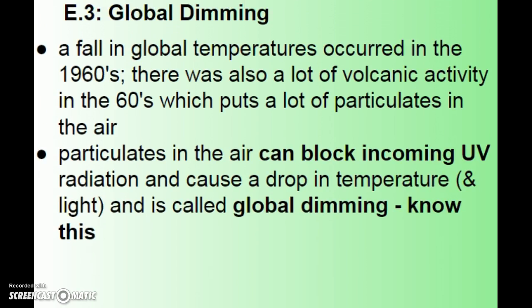There's also a thing called global dimming, which is kind of the opposite of the greenhouse effect. It's the idea that less sunlight is allowed into Earth. This happened in the 1960s when there was a lot of volcanic activity and a lot of soot in the air. We've had some summers with haze in the Twin Cities because of forest fires out west. These particulates in the air can actually block incoming UV radiation and cause a drop in temperature.